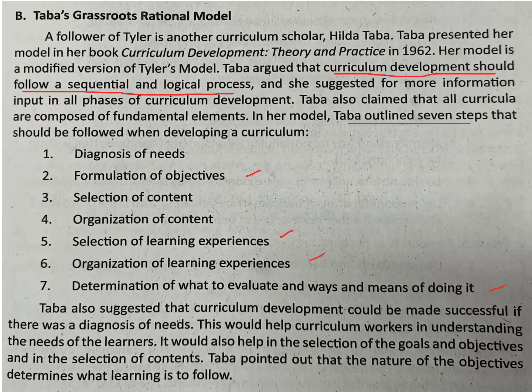The last addition is determination of what to evaluate and the ways and means of doing it. In Tyler's model, it was only stated that there has to be an evaluation. But in Taba's model, it is emphasized that there has to be a system — methodological ways of assessing a particular curriculum or learning acquisition.